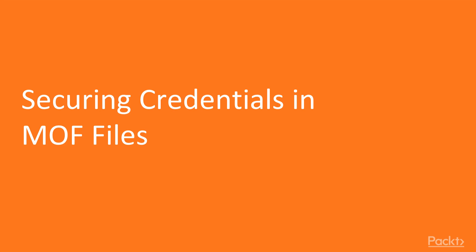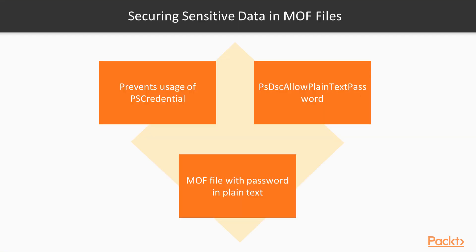Let's start by looking into how to secure the MOF files with sensitive data. By default, PowerShell DSC prevents the use of PS credential parameters in the configuration, because it would mean that the password would be stored as plain text in the MOF file, which isn't exactly secure. If you try to create a MOF file with a credential parameter value, it will fail with an error denoting that storing passwords in plain text is not recommended. A workaround for this problem is to override the default settings of the LCM by specifying the PSDSCAllowPlainTextPassword option to be true. This will help suppress the error and allow generating the MOF file with the password in plain text. But this is not the recommended practice, as anyone who has access to the MOF file can now read the password stored in it.